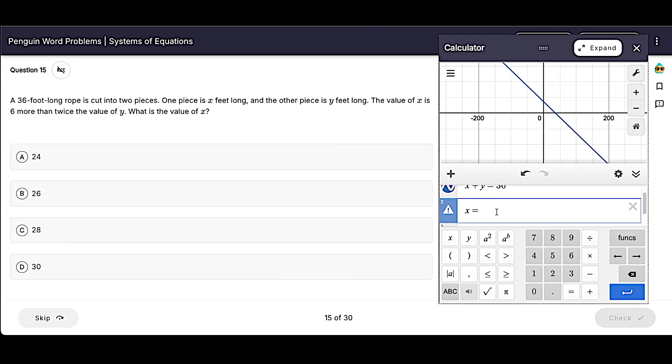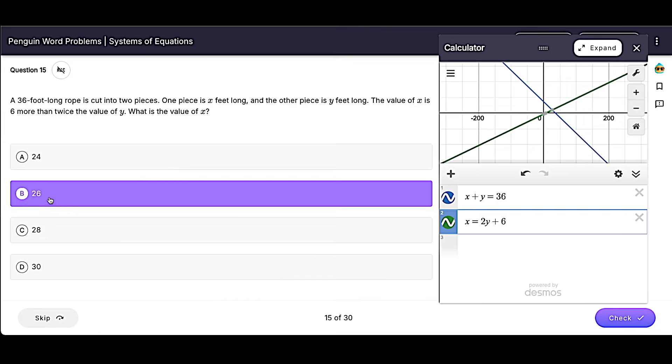Six more is going to be plus six. Twice the value of Y. That would be 2Y, which would come before we add it. And that's it. What is the value of X? The value of X is 26. Just like that.